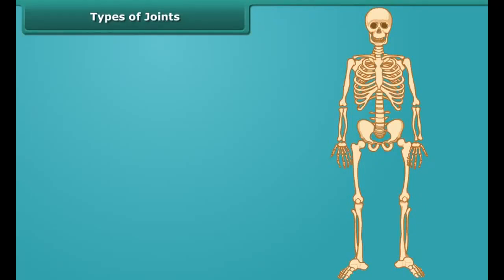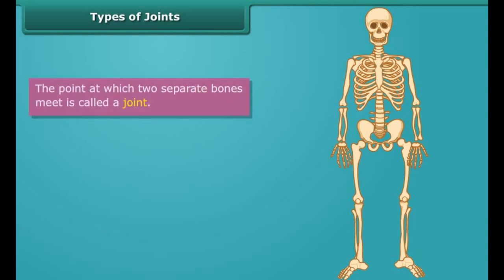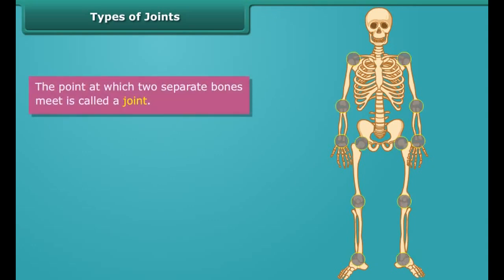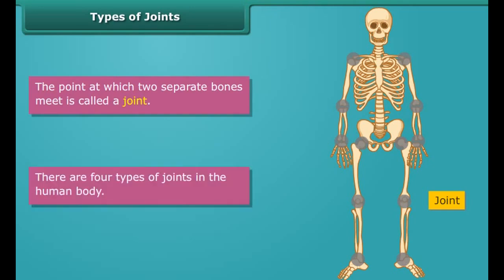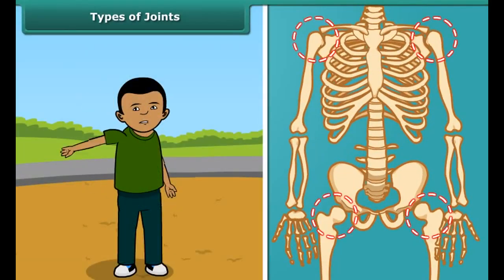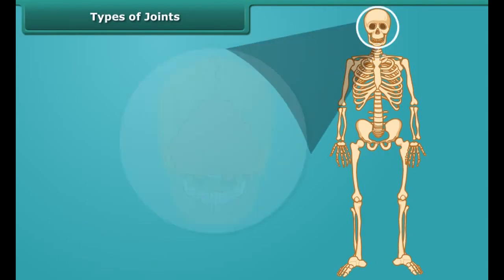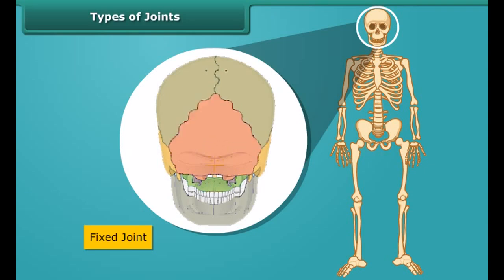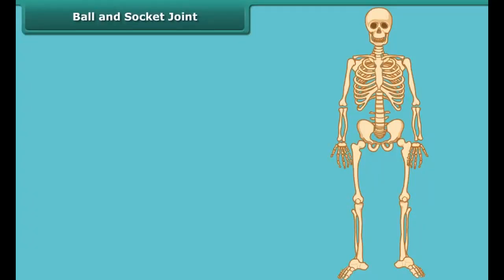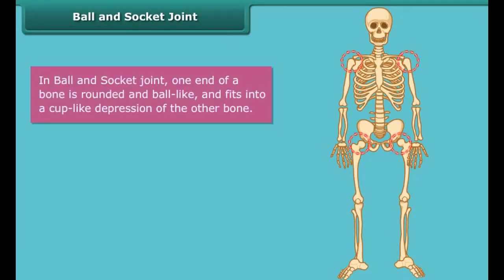We have just studied about the bones. Now it's time to know the joints. The point at which two separate bones meet is called a joint. There are four types of joints in the human body: ball and socket joint, hinge joint, pivotal joint, and fixed joint. In ball and socket joint, one end of a bone is rounded and ball-like and fits into a cup-like depression of the other bone, providing movement in any direction.